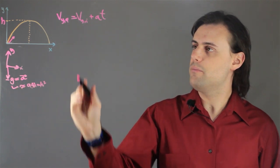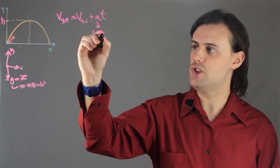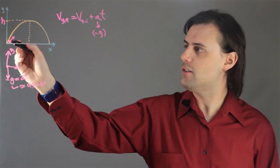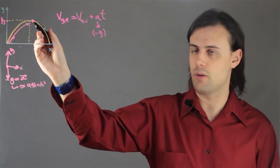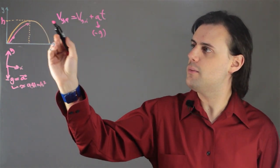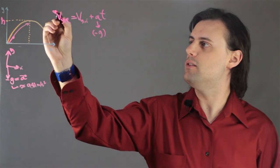Therefore, I can substitute a for negative g. And I don't know the time it takes to go from the initial point to the final point, where I have my maximum height. But I do know that at the maximum height, the velocity in the y direction is equal to zero.